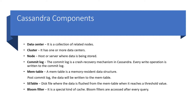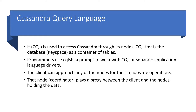The bloom filter is a special kind of cache. For query language, there is CQL — Cassandra Query Language — similar to SQL (Structured Query Language). CQL is used to access Cassandra through nodes and treats the database as a container of keyspaces and tables. You can use the command prompt tool CQLSH. The client can approach any node for read and write operations, and the coordinator node plays a proxy between the client and the nodes holding the data.